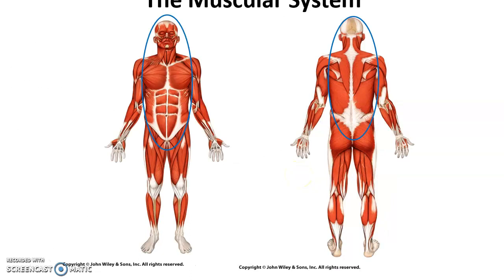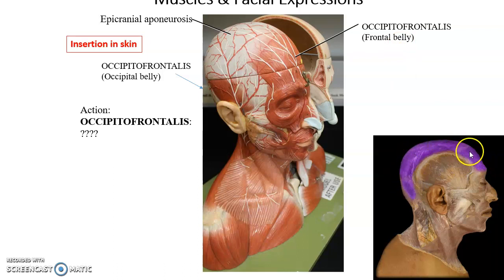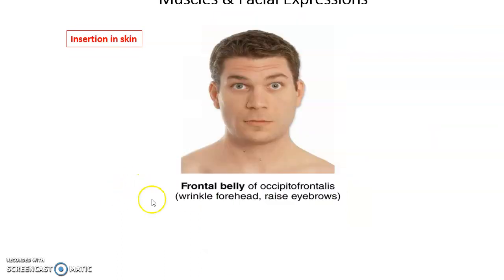Now we will start talking about axial muscles — muscles attached along the midline of the axial skeleton. First up is the occipitofrontalis, which goes from the back of the head where the occipital bone is to the front of the head where the frontal bone is. The occipitofrontalis inserts into skin, not bone. When it contracts, it wrinkles the forehead and raises the eyebrows.